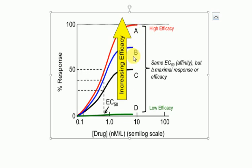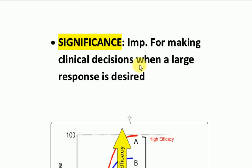Among these three drugs, the highest efficacy is that of drug A, then drug B, and then drug C. The significance of efficacy is that it is important for making clinical decisions when a large response is desired — that is, when you need a greater response to be achieved in some cases, then we consider the efficacy of the drug.